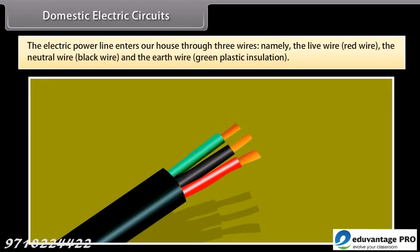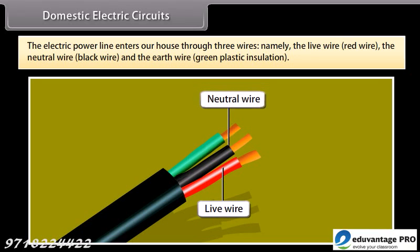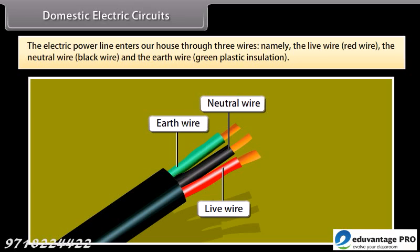The electric power line enters our house through three wires, namely the live wire (red wire), the neutral wire (black wire), and the earth wire (green plastic insulation). The live wire has a high potential of 220 volts and the neutral wire has zero potential. Thus, the potential difference between the live wire and the neutral wire is 220 minus 0, which equals 220 volts.